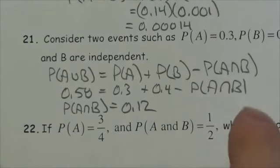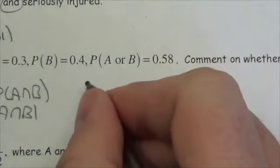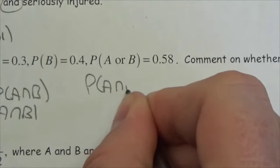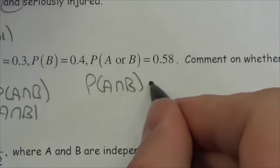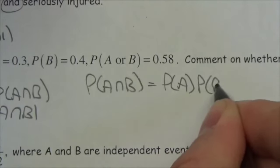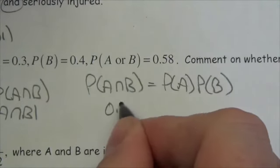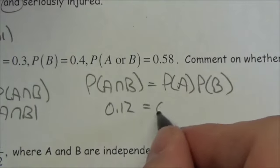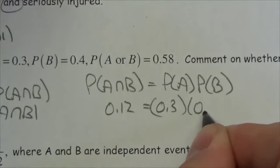Okay. Now, let's take a look over here. Now we know that the probability of A and B is 0.12. If it's independent, that is the probability of A multiplied by the probability of B. So 0.12. Is that in fact the same as 0.3 times 0.4?